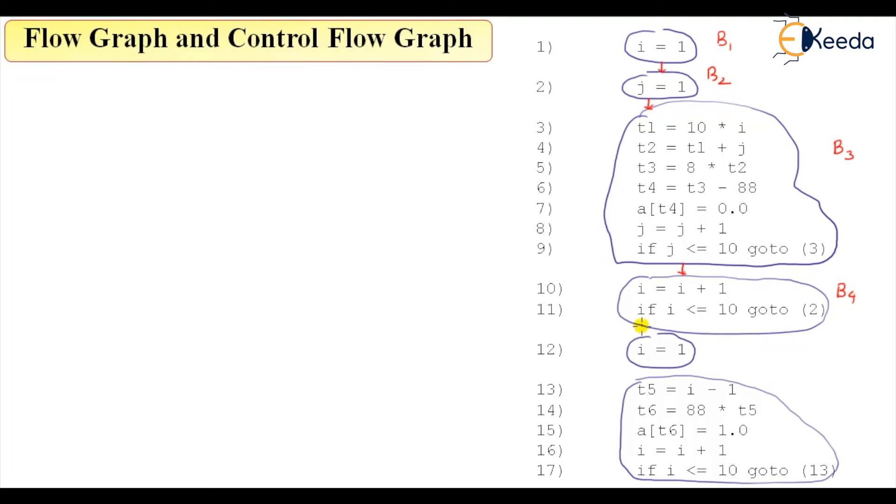Then this sequence will flow to b5, then the flow will be b6. So this is a sequential flow and